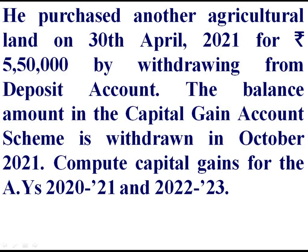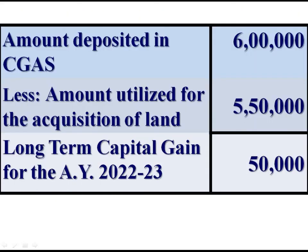By withdrawing from the deposit account, he purchased another land for Rs 5,50,000 during 2021-22. And the balance amount in the capital gain account scheme is withdrawn in October 2021. Therefore, that balance amount is taxable. That is, Rs 6 lakh was deposited; deduct Rs 5,50,000, the amount utilised for the acquisition of land. The balance of Rs 50,000 is taxable in the assessment year 2022-23.